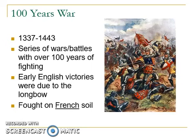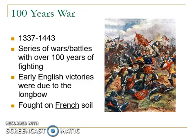The Hundred Years' War lasted from 1337 to 1443 — a series of wars and battles with over 100 years of fighting. Early English victories were due to the longbow, and they fought on French soil. The English were victorious in many early battles while the French continuously lost on their own soil. The longbow was a huge advantage because it allowed the English to attack from far away, taking out enemies without risking their own lives.